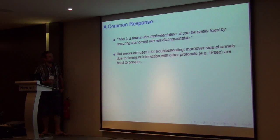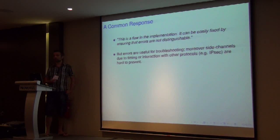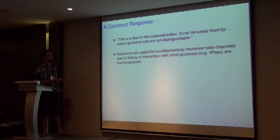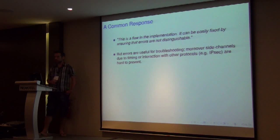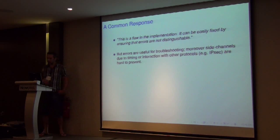The common response I usually get is that this is a flaw in implementation, and it can easily be fixed by ensuring that errors are indistinguishable in practice. However, this turns out not to be trivial, because first of all, errors have a use in practice — they're useful for debugging and they're there for a reason. Moreover, other side channels, like timing side channels, or the security protocol's interaction with layers above or below, can reveal which check in the decryption algorithm failed. These things are hard to predict and prevent in practice.